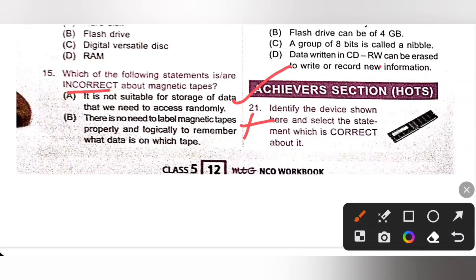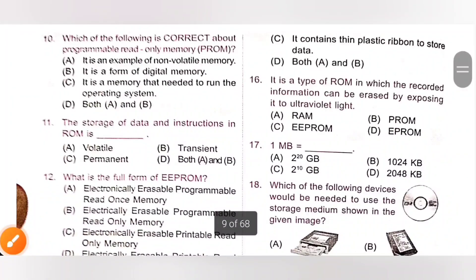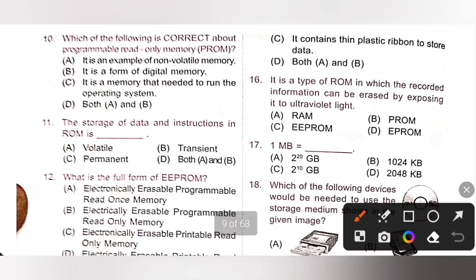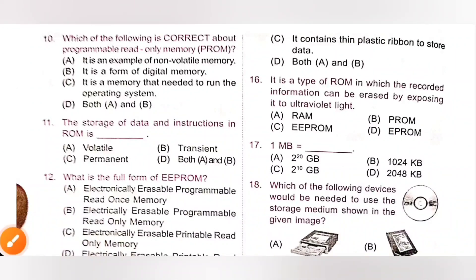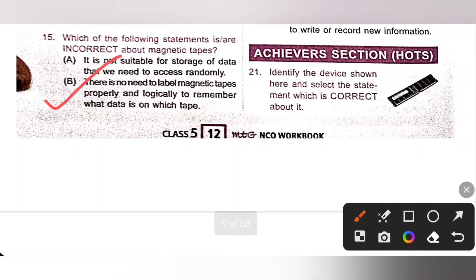Because magnetic tapes are required to label properly to remember what type of data is written in it. Next C, it contains thin plastic ribbon to store data. It is also correct statement. So we need to find the incorrect statement. Option B is the correct answer.